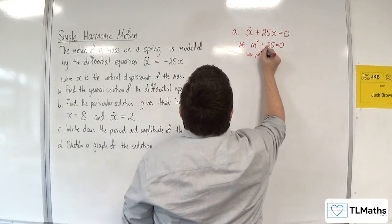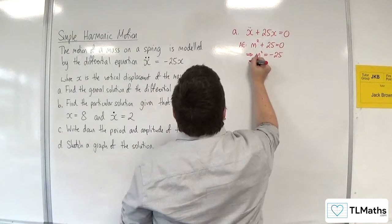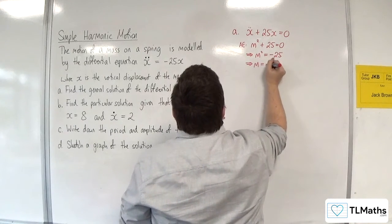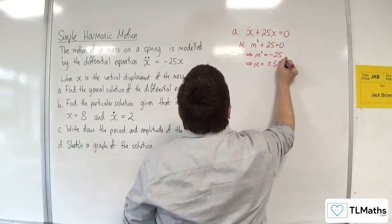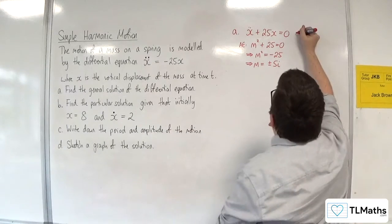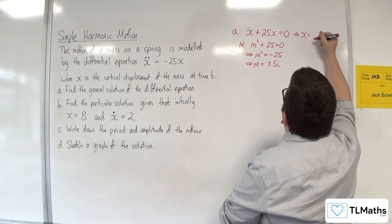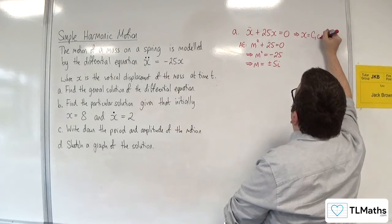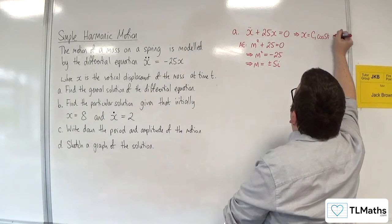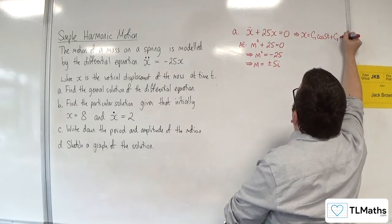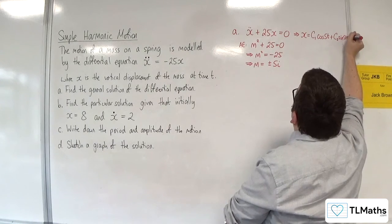So that means that m² would have to be minus 25. So m is plus or minus 5i. So the general solution would be x is equal to some constant c₁ cosine of 5t plus some constant c₂ sine of 5t.